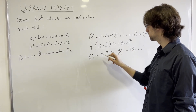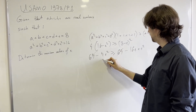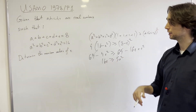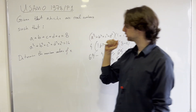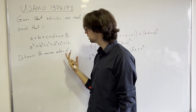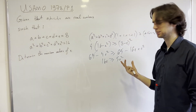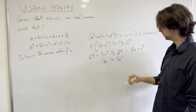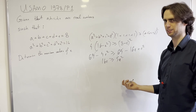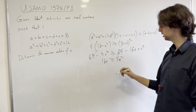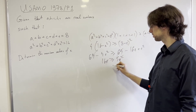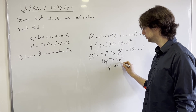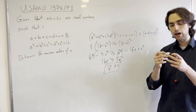In other words, we're going to have 16e greater than or equal to 5e squared. Since e needs to be a positive real number, we can divide by e and get e is less than or equal to 16 over 5. And now we've found a maximum estimate for e that follows from this.